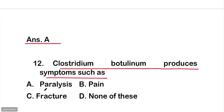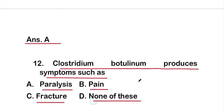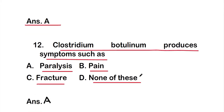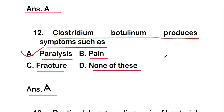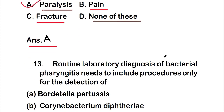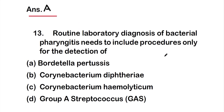Question 12: Clostridium botulinum produces symptoms such as — option A: paralysis; option B: pain; option C: fracture; option D: none of these. The right answer is option A: paralysis.